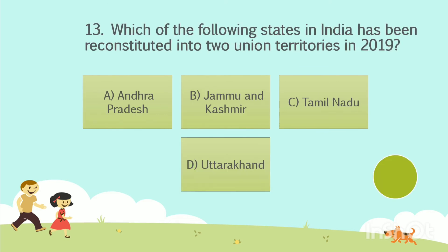Question number 13. Which of the following states in India has been reconstituted into two union territories in 2019? Option A: Andhra Pradesh. Option B: Jammu and Kashmir. Option C: Tamil Nadu. Option D: Uttarakhand. Your time starts now. The answer is Option B, Jammu and Kashmir.